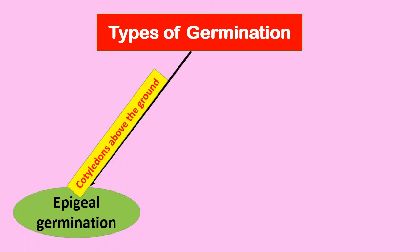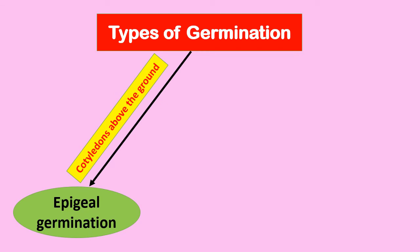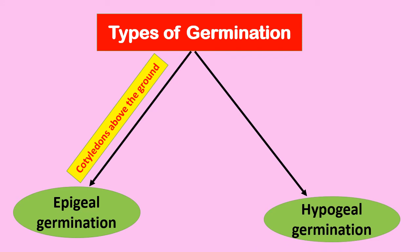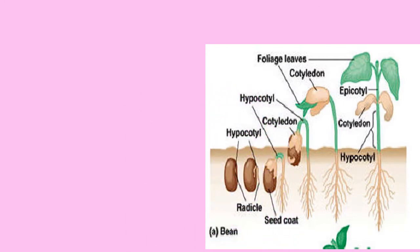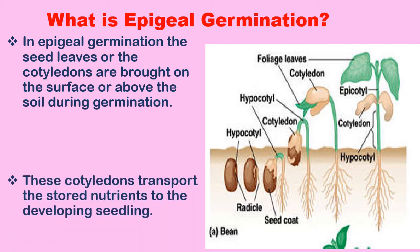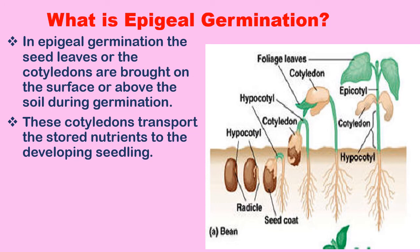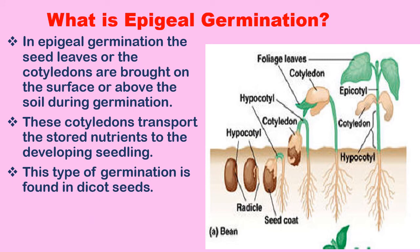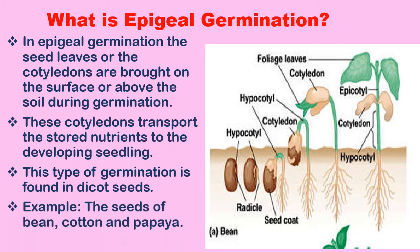Germination of a seed can be of two types: epigeal germination, where cotyledons are pushed above the ground; and hypogeal germination, where cotyledons remain below the ground. In epigeal germination, the seed leaves or cotyledons are brought to the surface or above the soil during germination. These cotyledons transport the stored nutrients to the developing seedling. This type of germination is found in dicot seeds. Examples: seeds of bean, cotton and papaya.